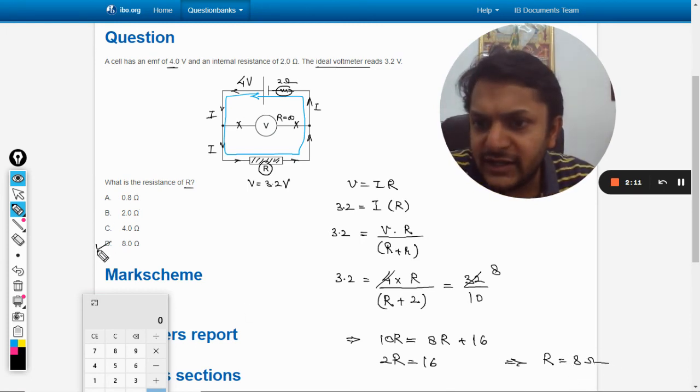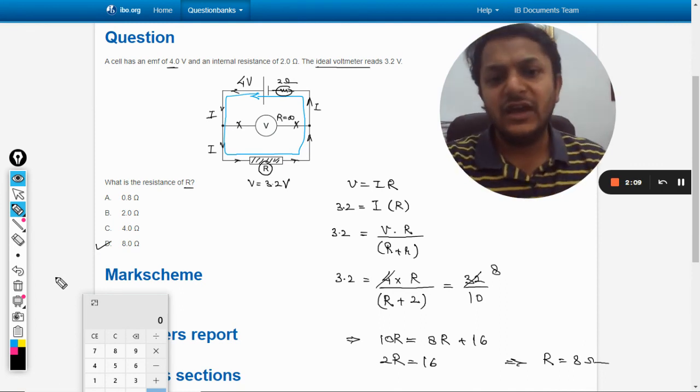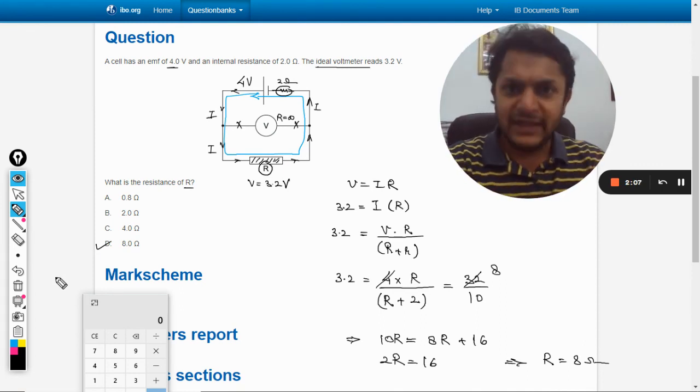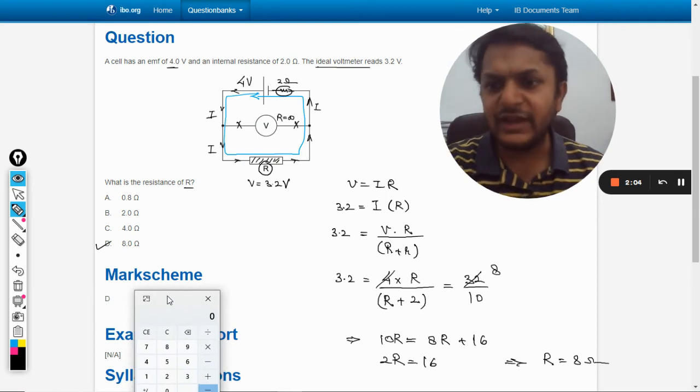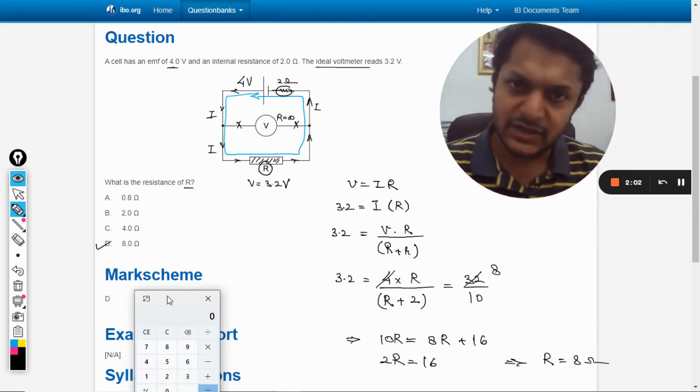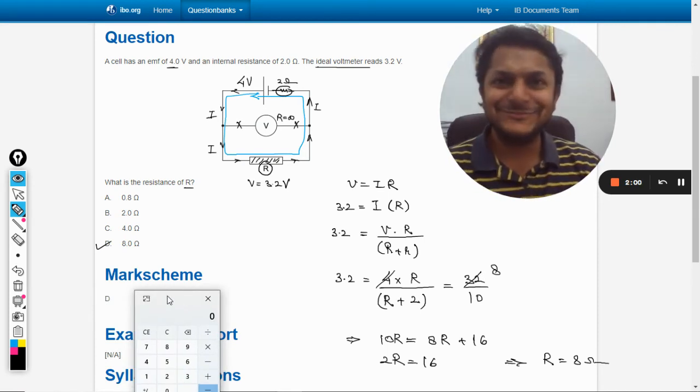So accordingly we have D as the answer. So let us check it from the markscheme. Well, exactly the answer is D. So with this, all the best, bye.